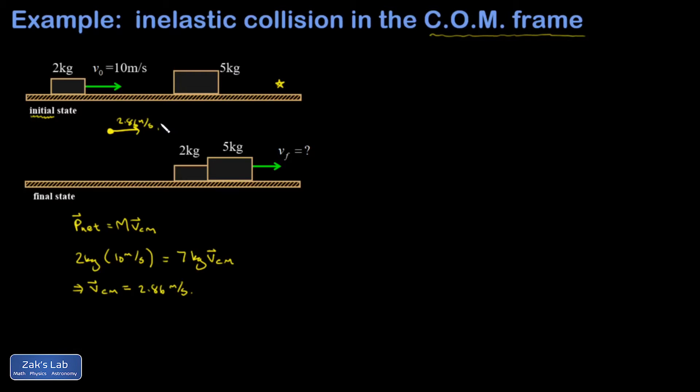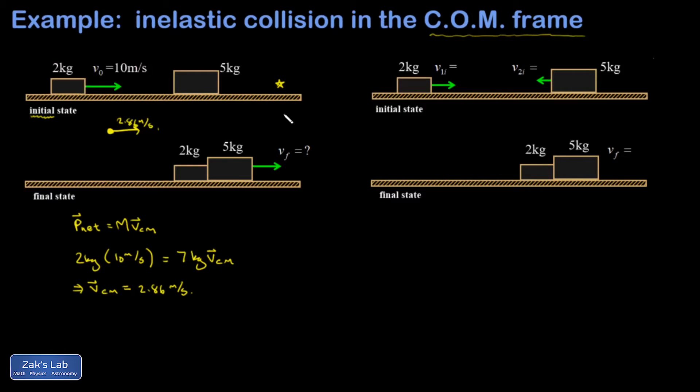So now I want to shift everything into the center of mass reference frame. So I'm going to pop up a new picture real quick. And I'm imagining myself running alongside this whole scene at exactly 2.86 meters per second. And that makes it look like the rightward moving mass is moving slower. So to get V1 initial in this new frame of reference, I would subtract 2.86 from 10, and that gives me 7.14 meters per second.